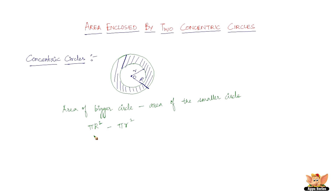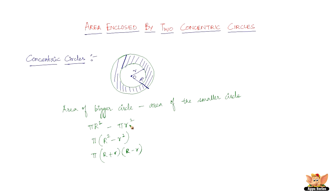We can take out pi as common, giving us pi into capital R squared minus small r squared. Now, R squared minus r squared can be treated as a squared minus b squared, which equals a plus b into a minus b. So capital R squared minus small r squared equals capital R plus small r into capital R minus small r. Therefore, the area enclosed by two concentric circles is pi times capital R plus small r times capital R minus small r.